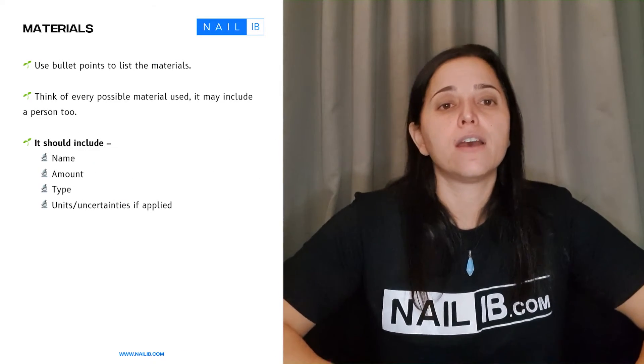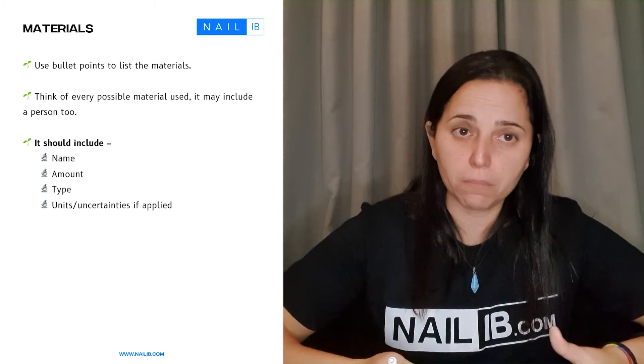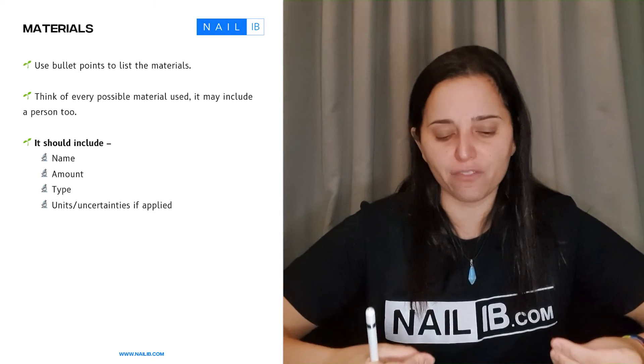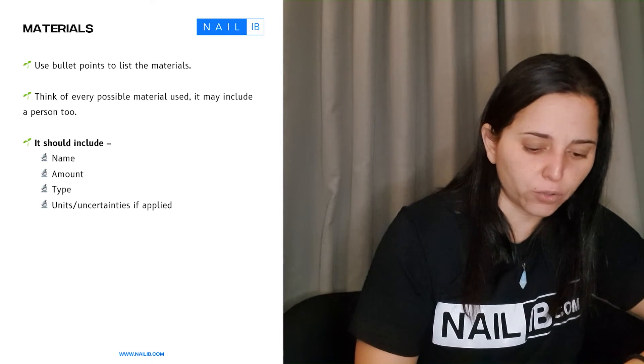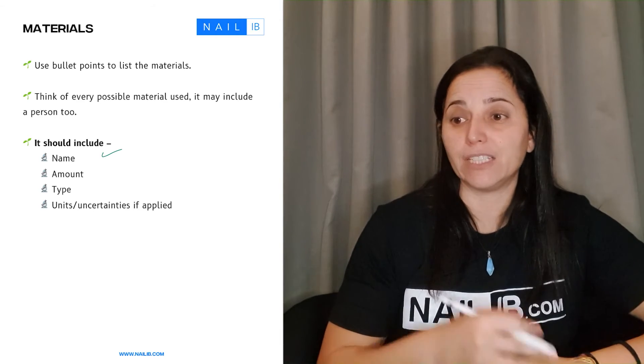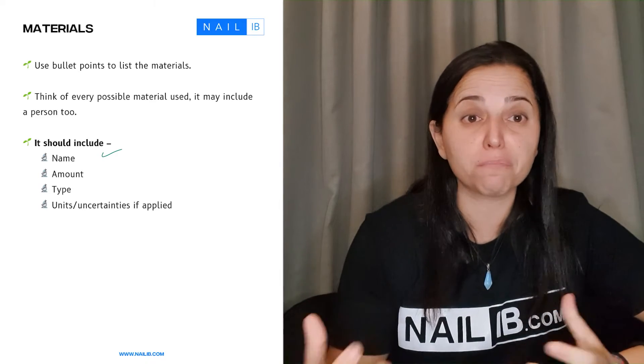Now let's go to the material section. The material section, you also need to put them in detail. It can be bullet points, it can be a table as you wish, but here are the most important things that you have to include. You're going to have to include the name - what is the name of that material, the name of an equipment, the name of a plant, the names of beakers.